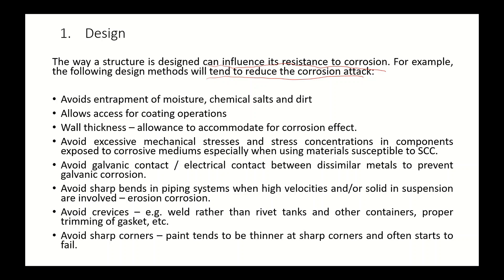One of the examples is to try to avoid the entrapment of moisture, chemicals, salt, or dirt, because the presence of moisture or salt can enhance or increase the corrosion rate of that structure or material. Next, allow access for coating operations — if possible, try to avoid very small or hidden areas in the object, so try to make it accessible.